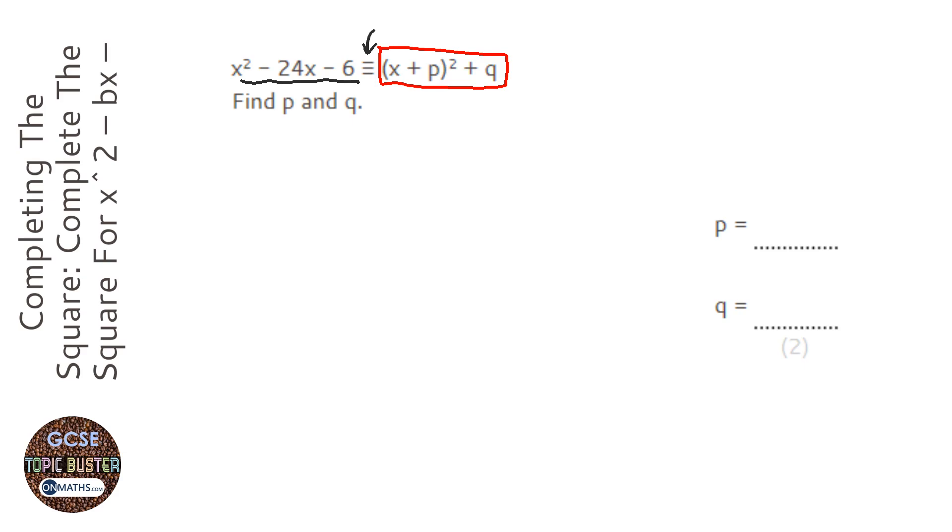So we're not going to use the right-hand side at all in our answer, but we're going to have to have a look and see what they did to the left-hand side to get to the right-hand side. And what they did is they completed the square.